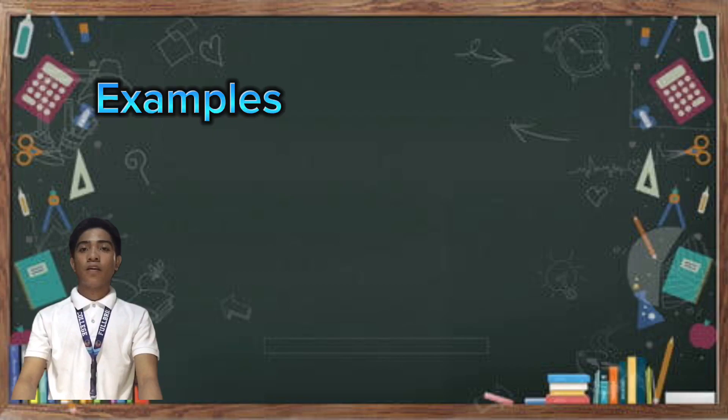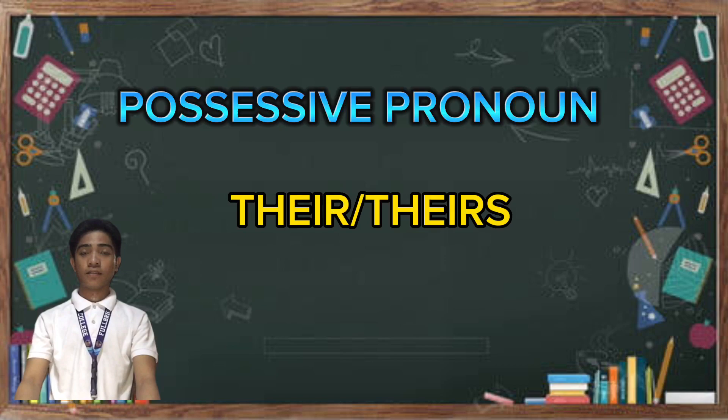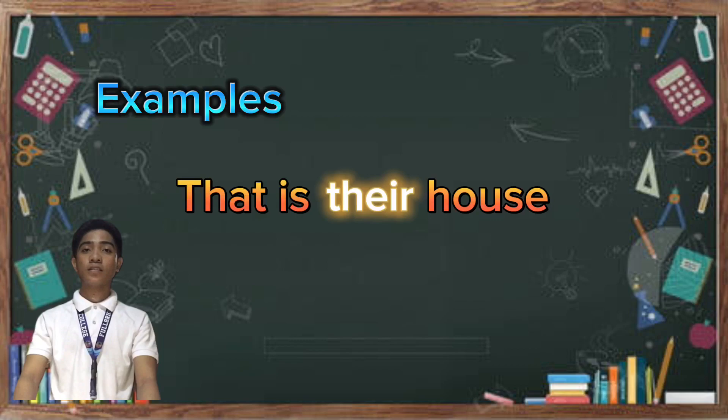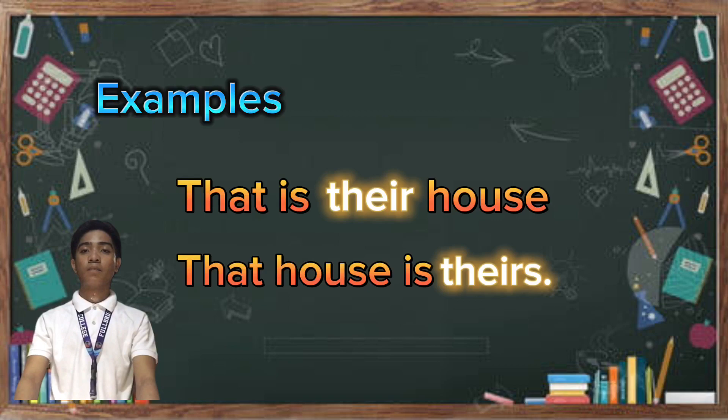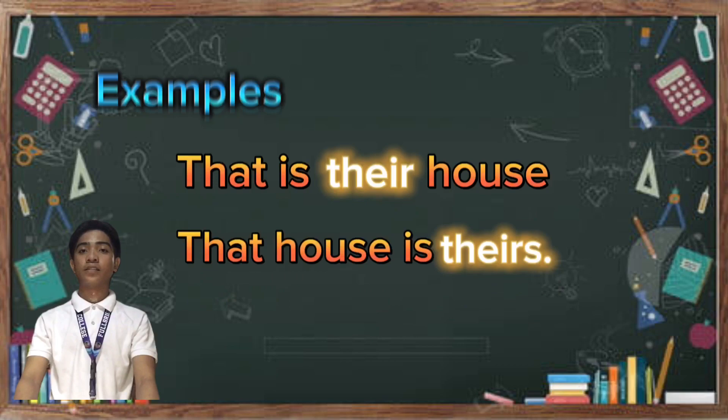For the next example, we are going to use the possessive pronoun 'their' and 'theirs.' The first example is: 'That is their house.' The second is: 'That house is theirs.' In the first example we use 'their,' and in the second example we use 'theirs.'